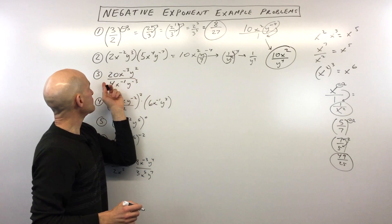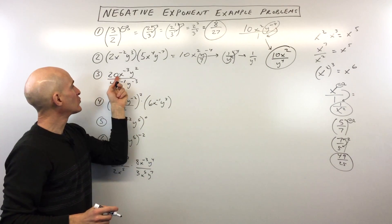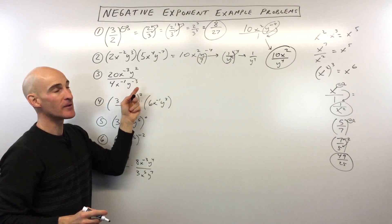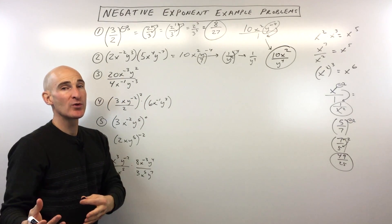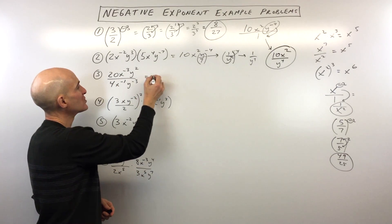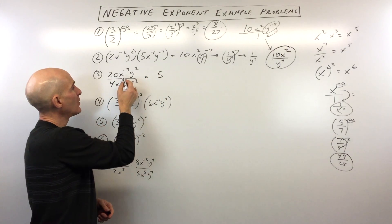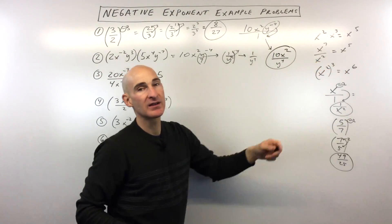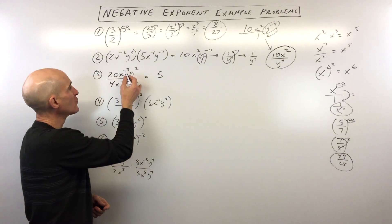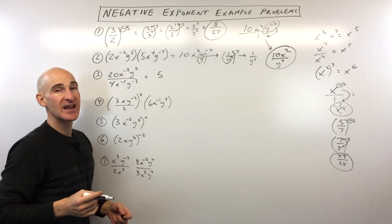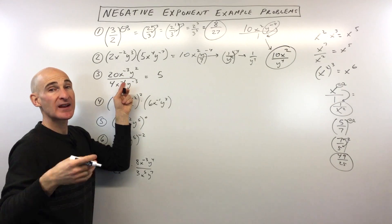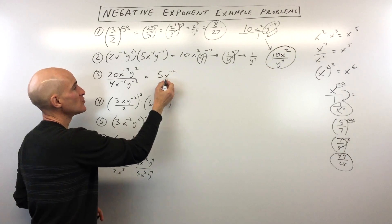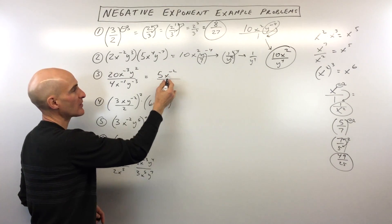Let's go to the next one. Number three: 20x to the negative third, y squared, all divided by 4x to the negative one, y to the negative third. Remember we're working with like terms. So we've got 20 divided by 4, which is 5. Now we're dividing, so we subtract, and the answer goes in the numerator. We've got negative 3 minus negative 1, which is like negative 3 plus 1, giving us x to the negative 2. We're putting that result in the numerator.